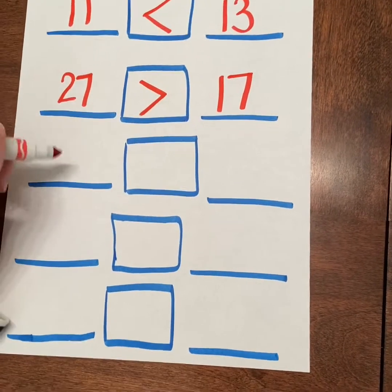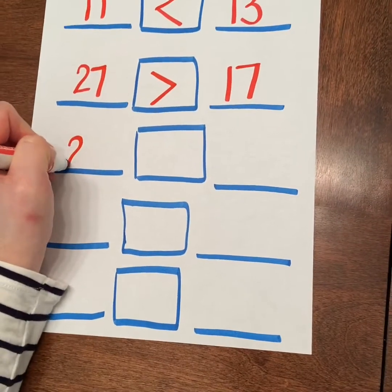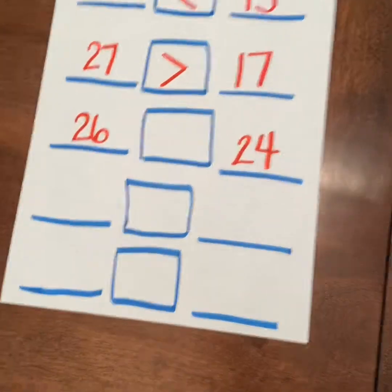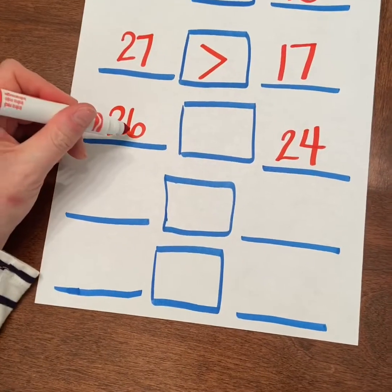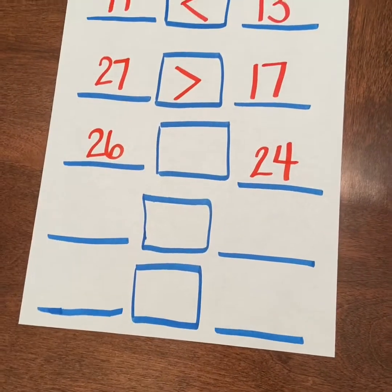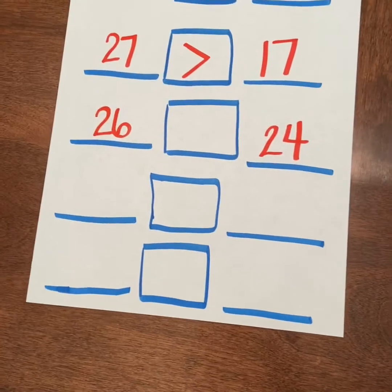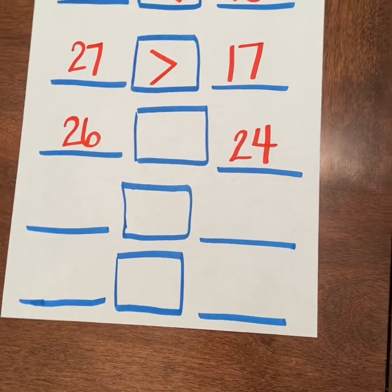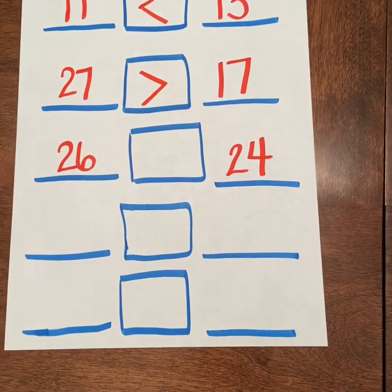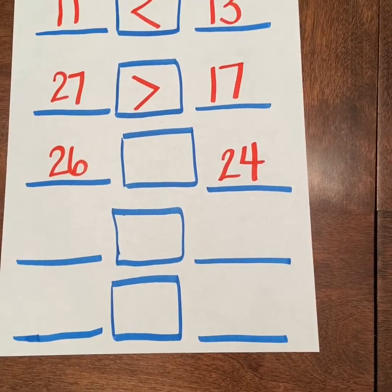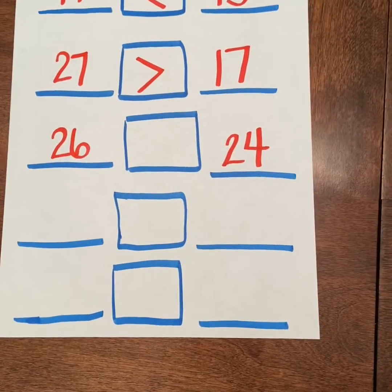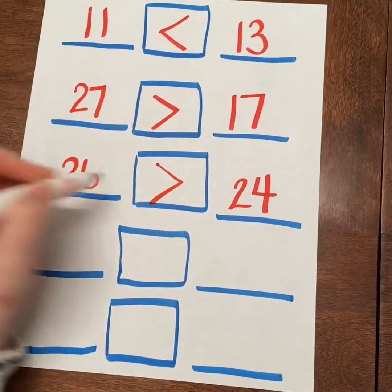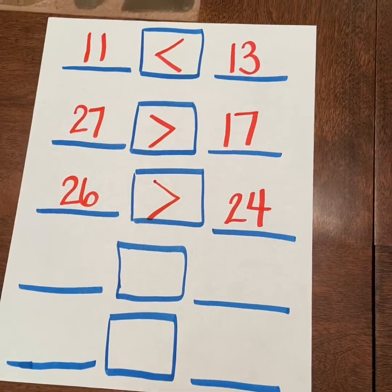Next two numbers, write 26 and 24. Which one is greater — is 26 greater than 24, or is 24 greater than 26? Go ahead and draw in your alligator mouth. 26 is greater than 24. Two more.